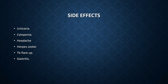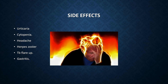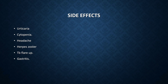What are the side effects of Tofacitinib? It can lead to urticaria, cytopenia by bone marrow suppression, headache, herpes zoster by reduced immunity. It can also lead to flare-up of tuberculosis, and gastritis is the most common side effect.